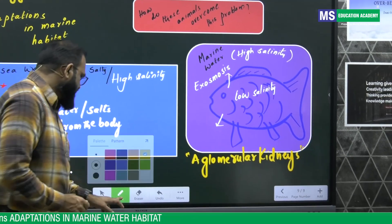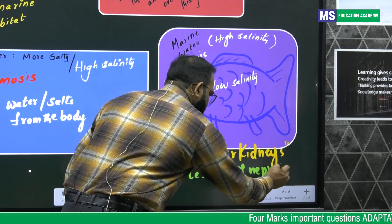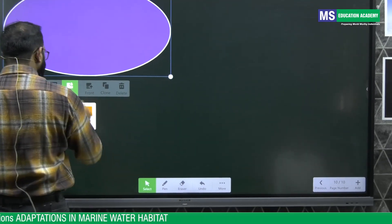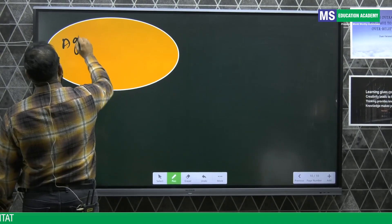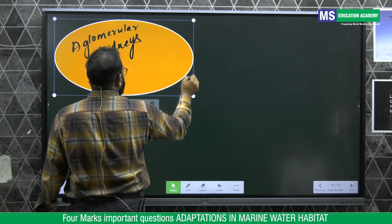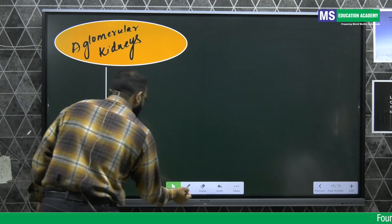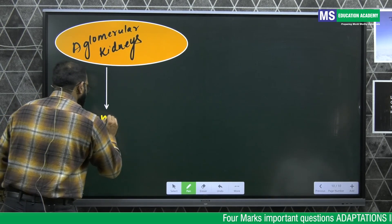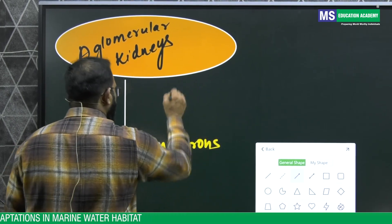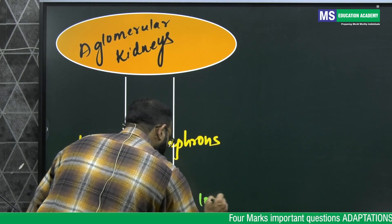Aglomerular kidneys means a less number of nephrons. The adaptation here is aglomerular kidneys, meaning less number of nephrons, which minimizes the loss of water and salts from the body.